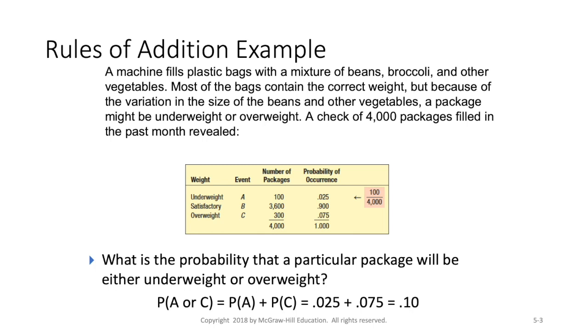Alright, so first we're going to find the probability of A occurring. So there are 100 here and out of that total of 4,000. So that probability would come out to this 0.025.